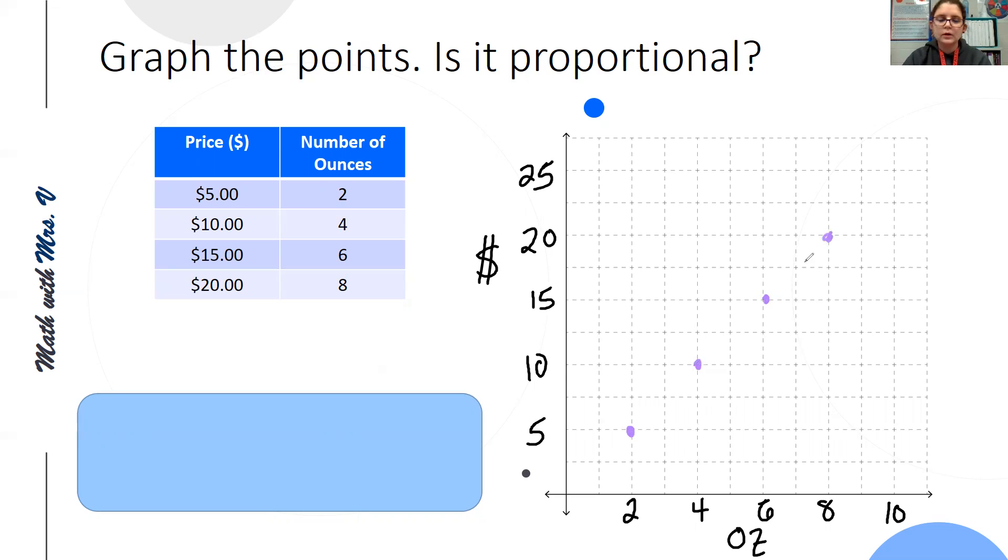Now I'm going to draw my line. I always like to start at the back dot and then connect forward and see if it extends nicely through the origin, still touching all of my dots, and it does. So this is a straight line and it goes to the origin. So this is proportional.